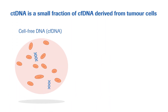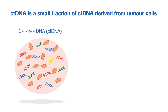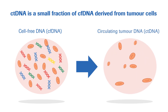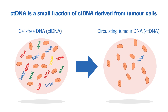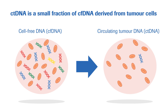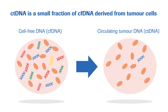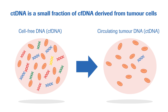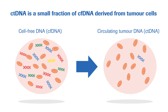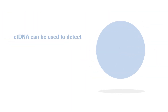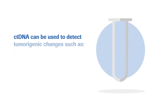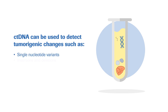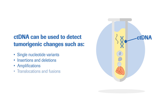ctDNA is a small fraction of cfDNA that is derived from apoptotic and necrotic tumour cells. Low amounts of ctDNA may pose challenges to detection, and the analytical sensitivity of these tests is important to generate reproducible outcomes. ctDNA can be used to detect tumourigenic changes, such as single nucleotide variants, insertions, deletions, amplifications, translocations, and fusions.